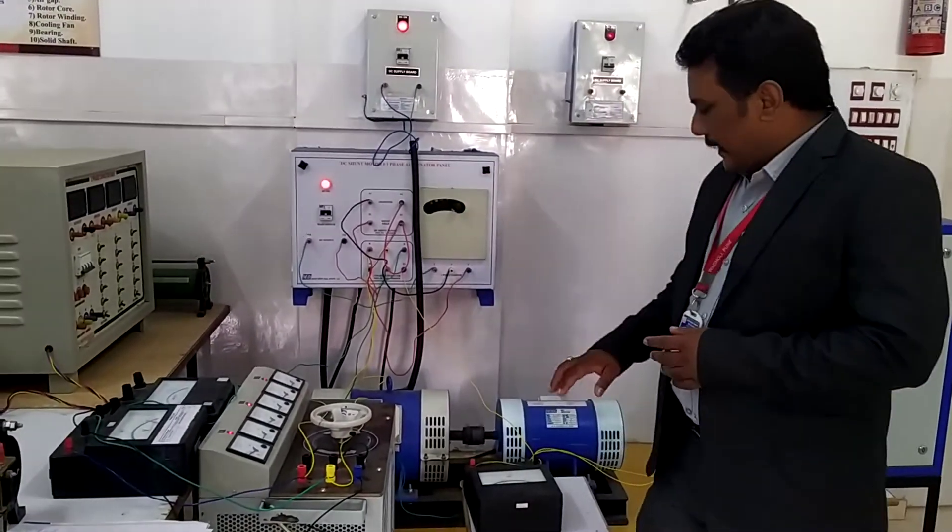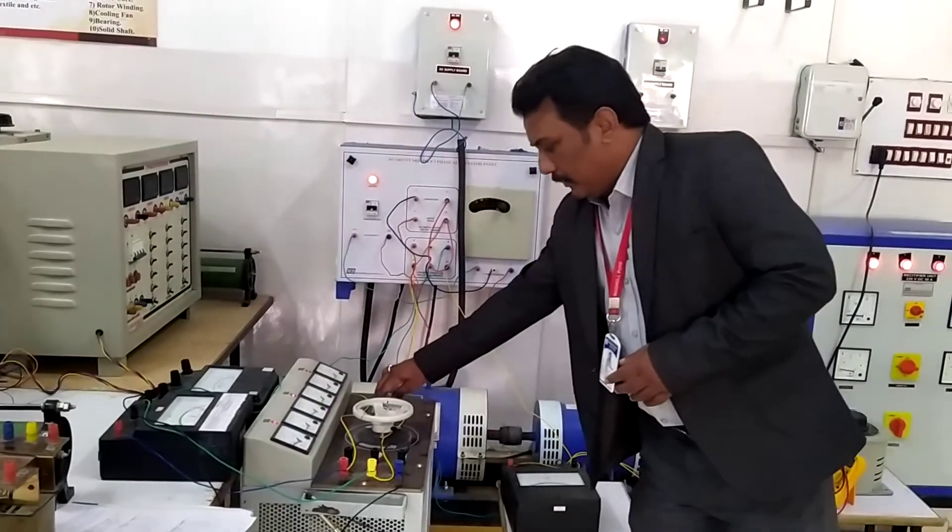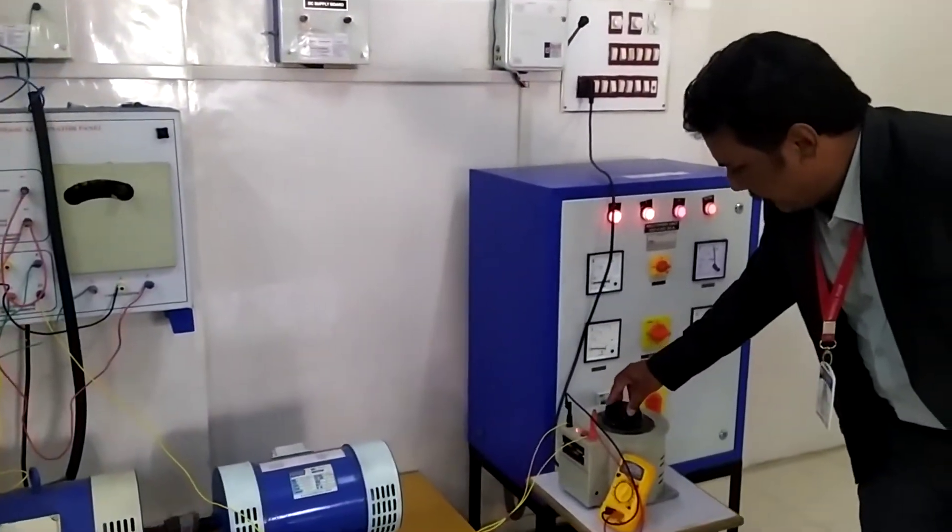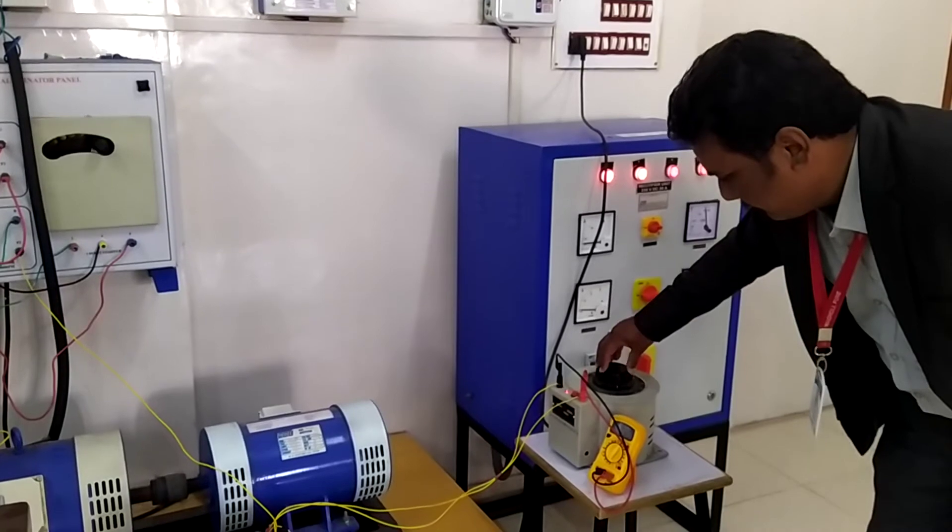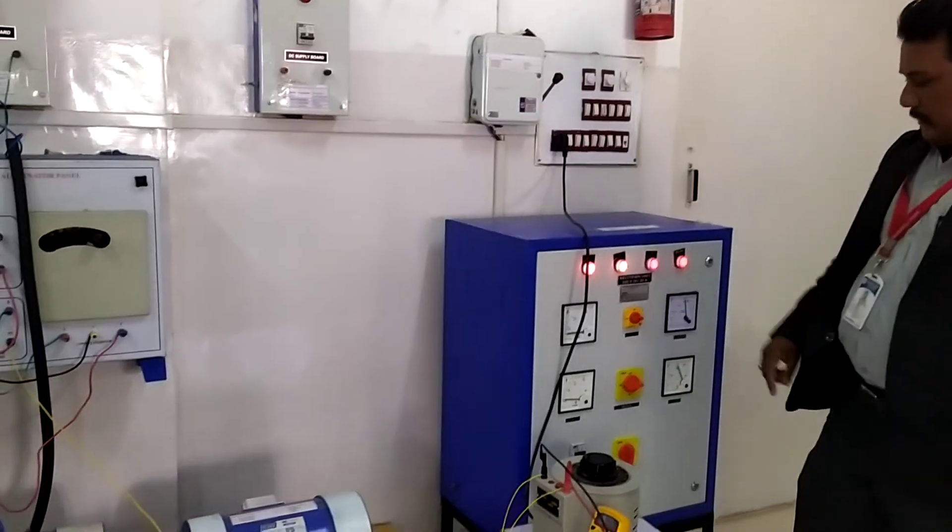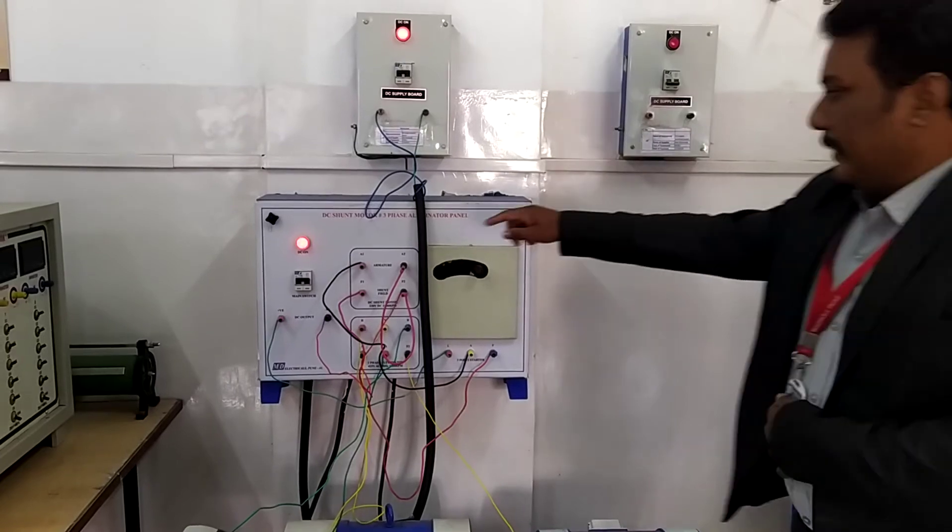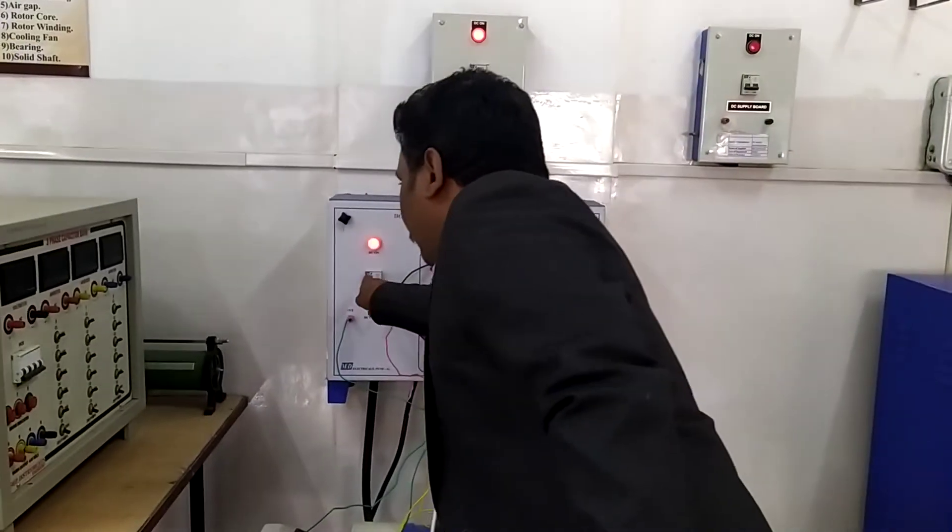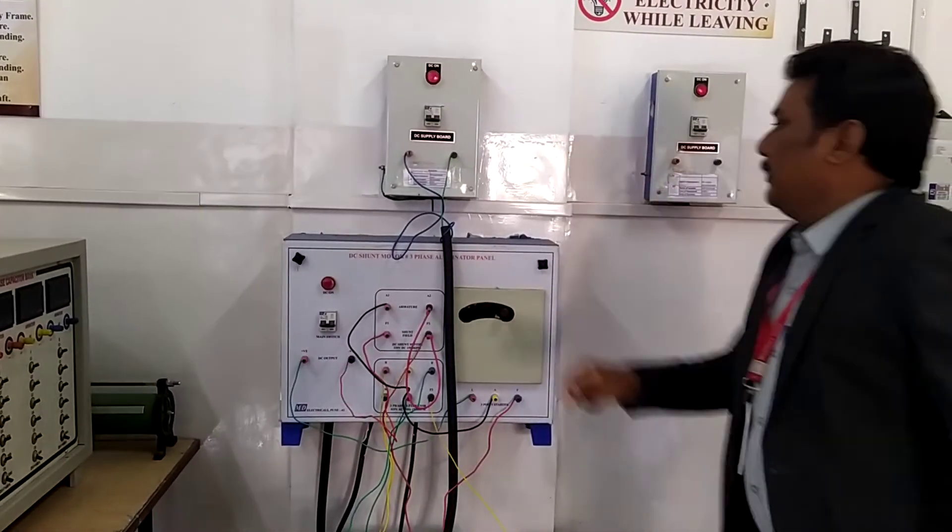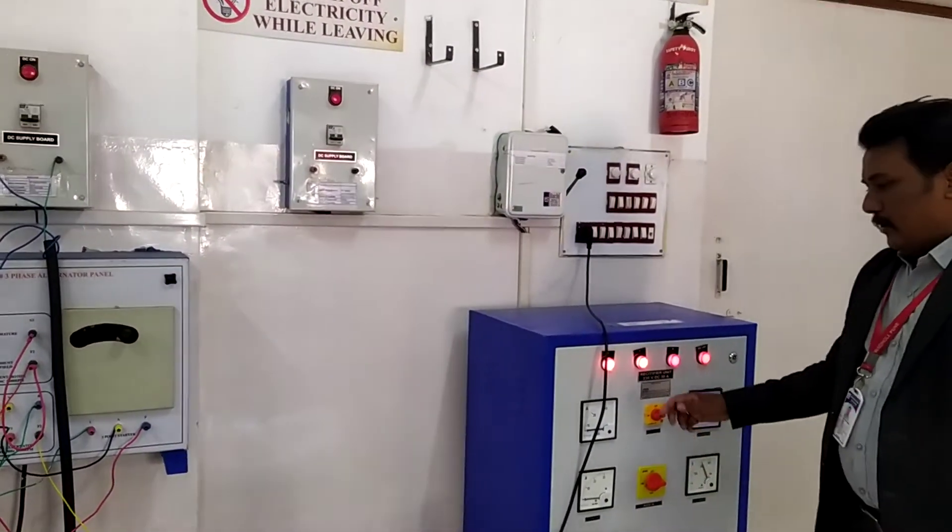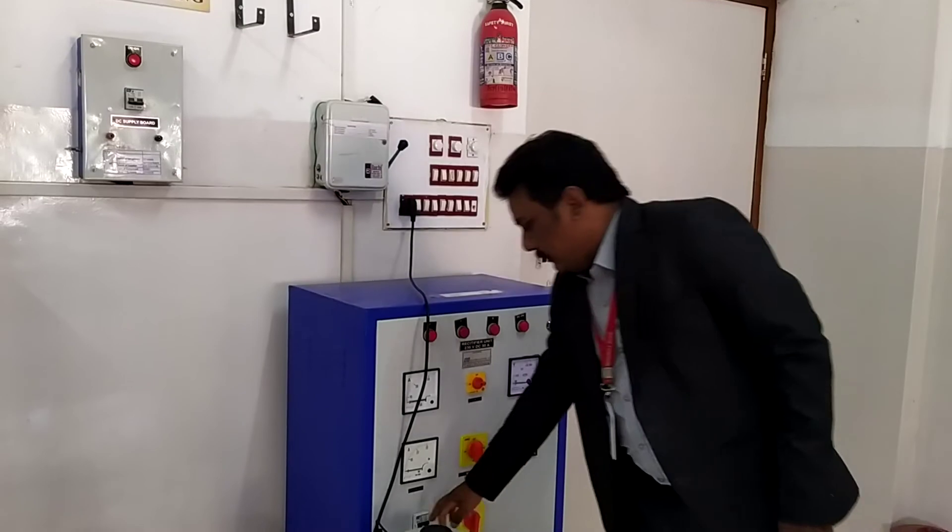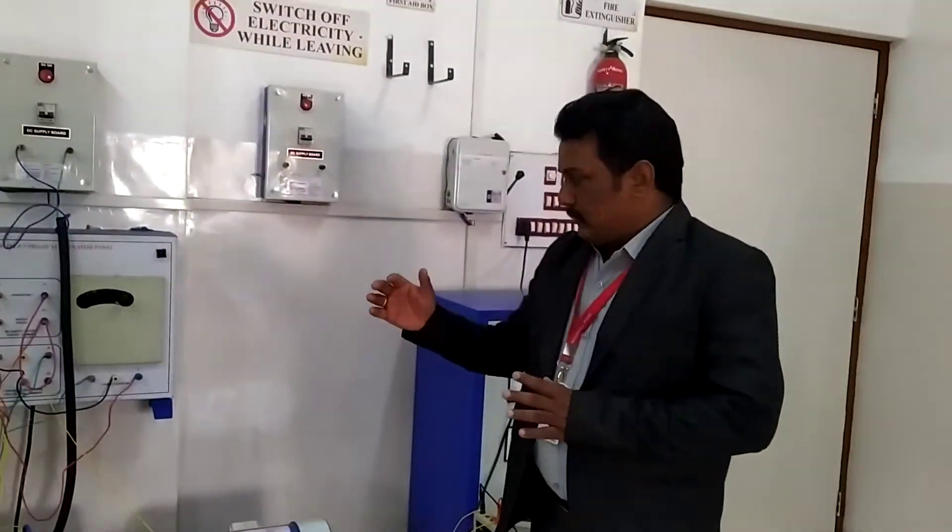Now excitation becomes zero. Then first switch off main supply. Accordingly switch off DC main supply. And then switch off rectifier unit. In this way the practical reading is recorded.